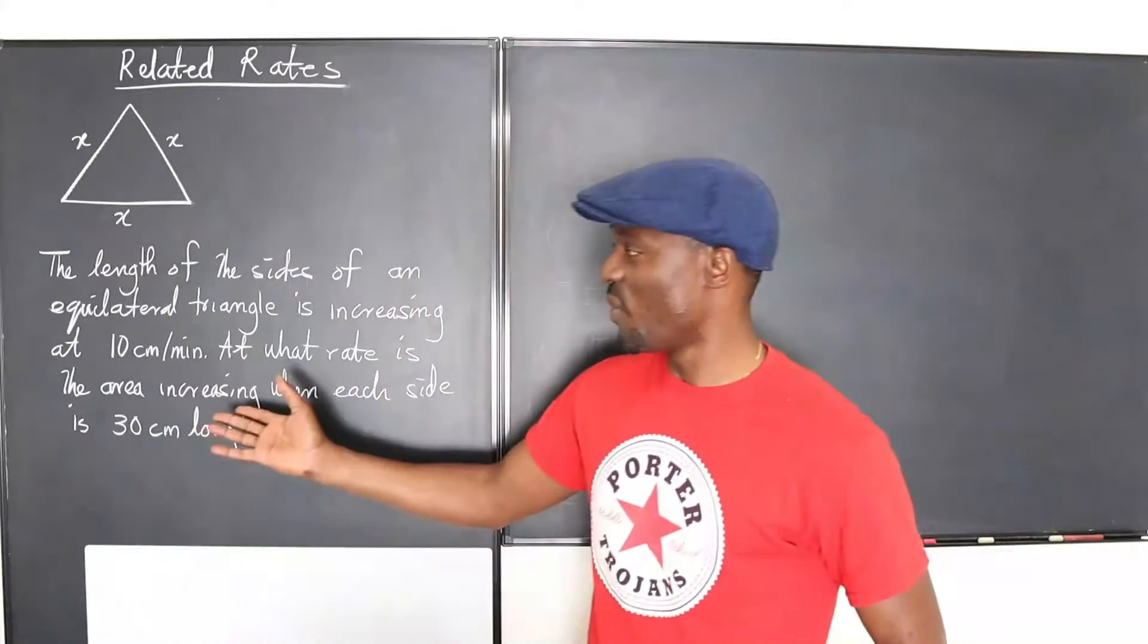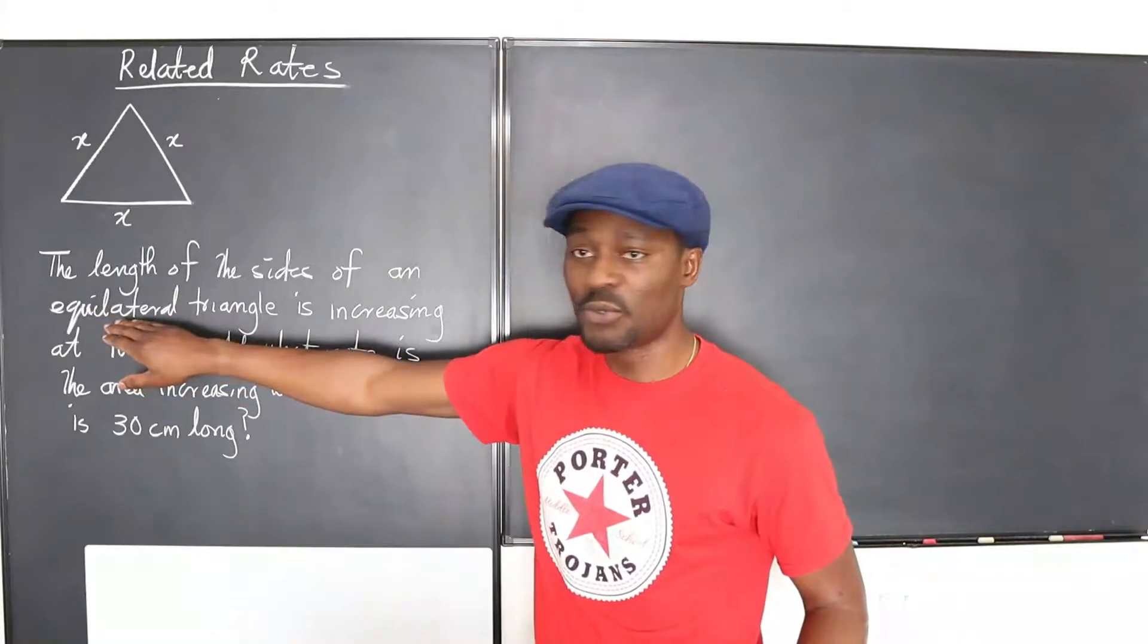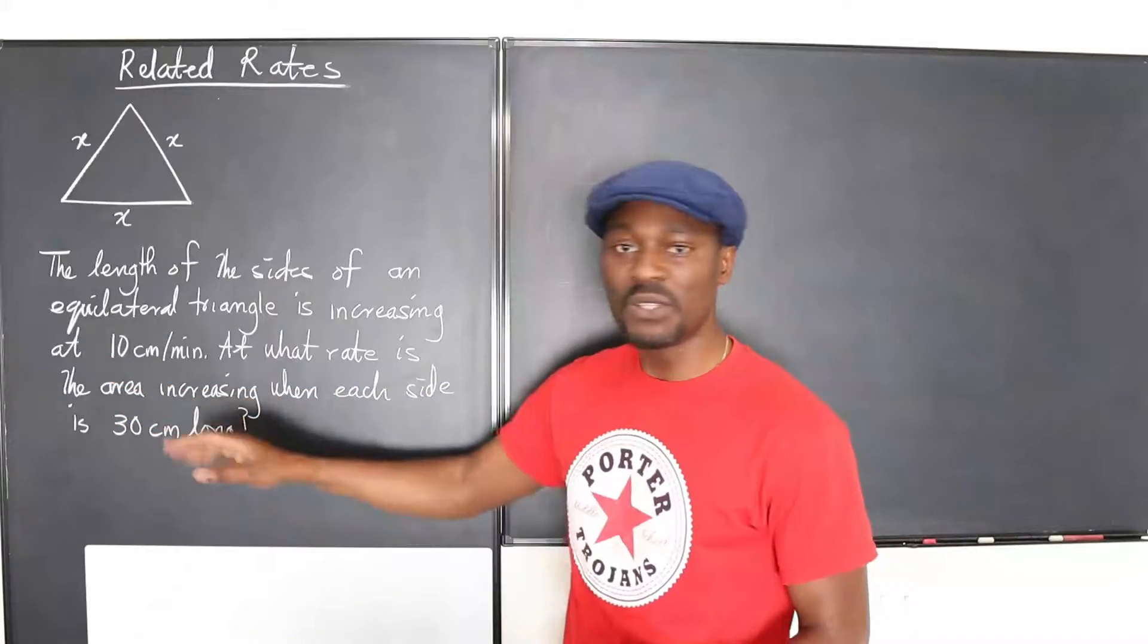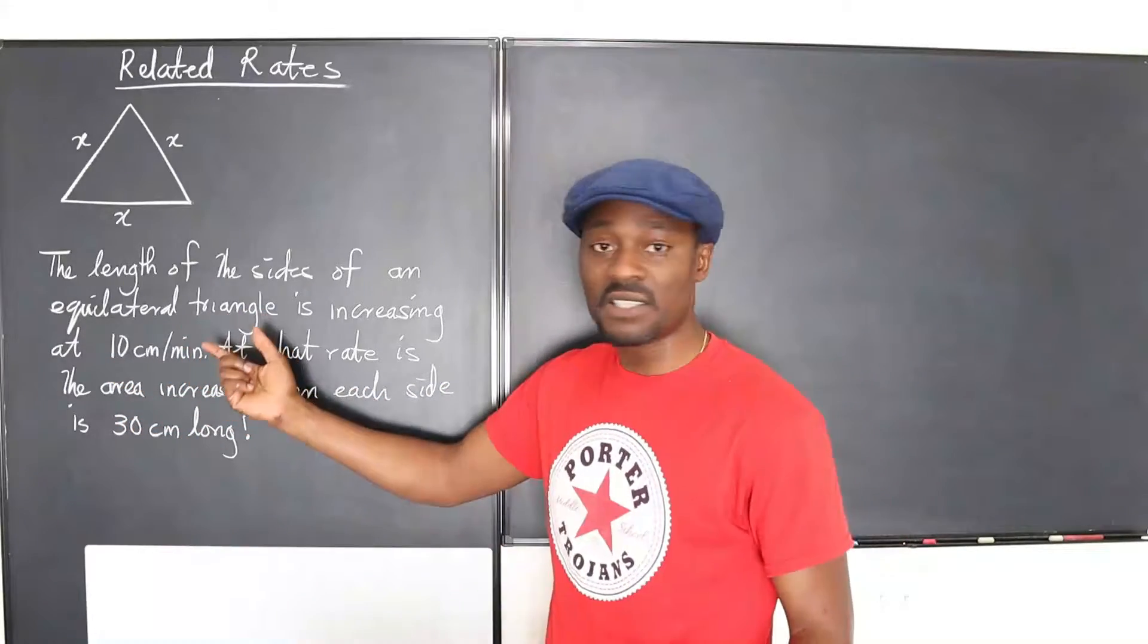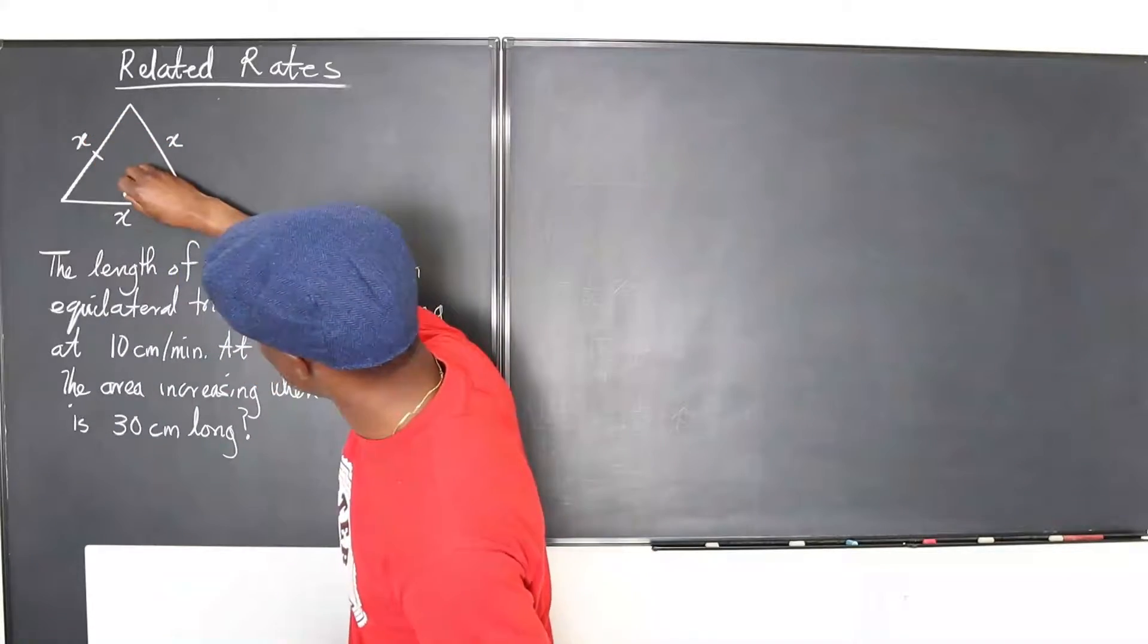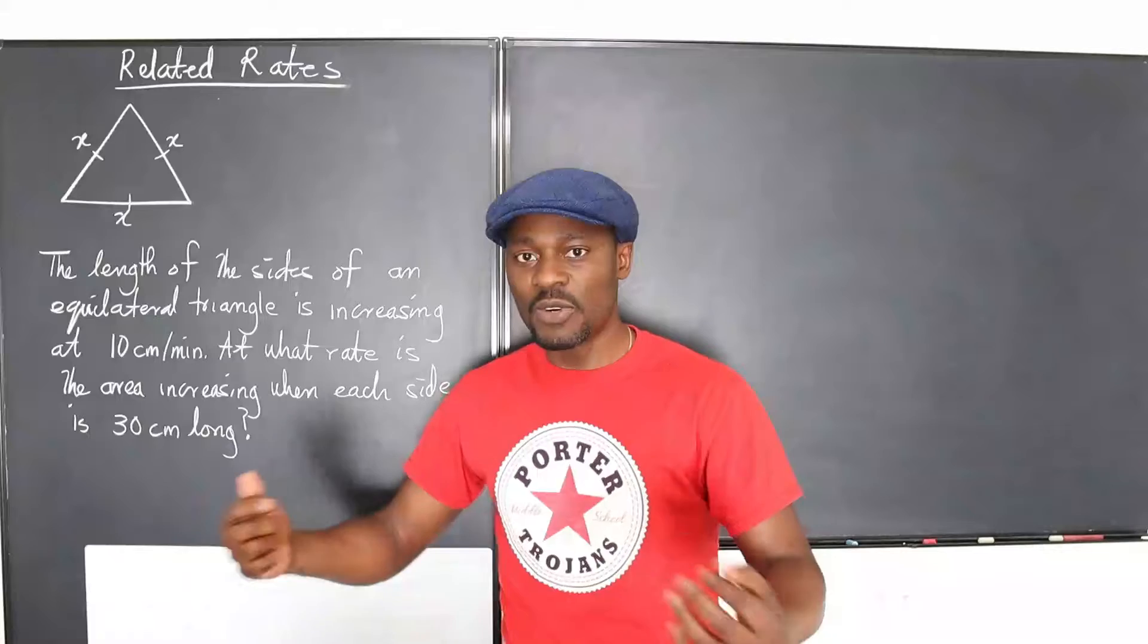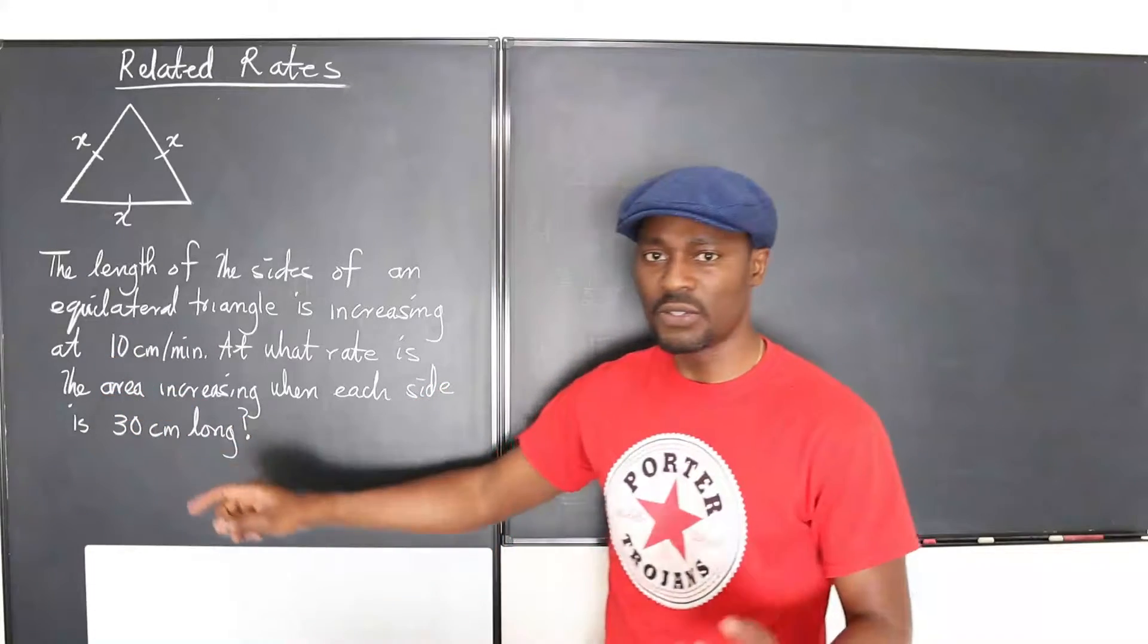Look at this question for example. We're told that the length of the sides of an equilateral triangle is increasing at 10 centimeters per minute. So the length of each side is increasing - you have a triangle where all the sides are the same, and each side is increasing at the rate of 10 centimeters per minute.